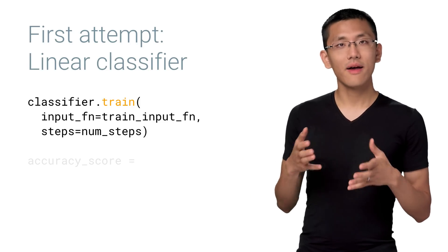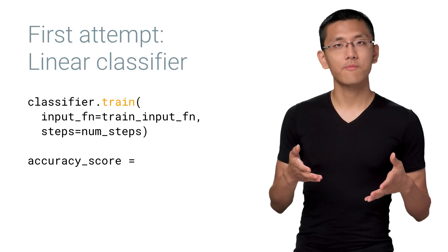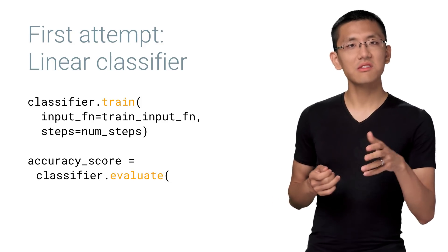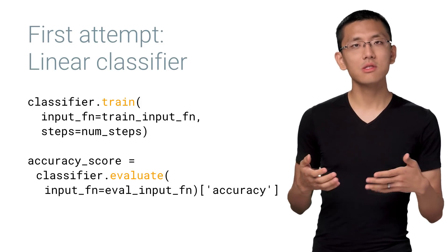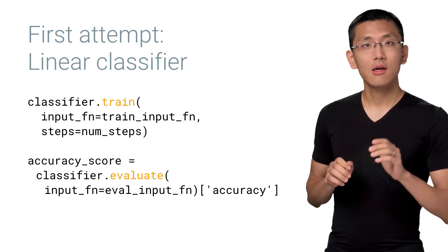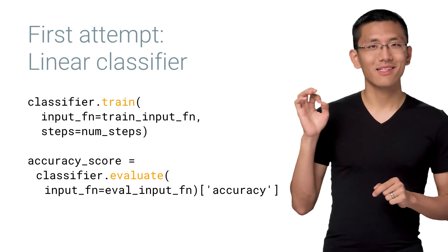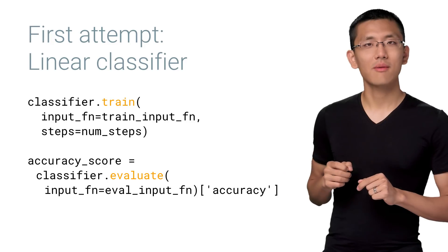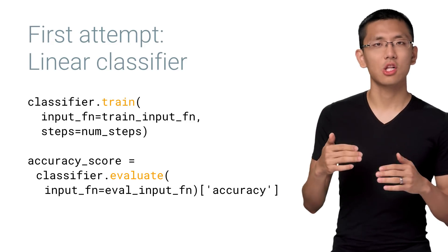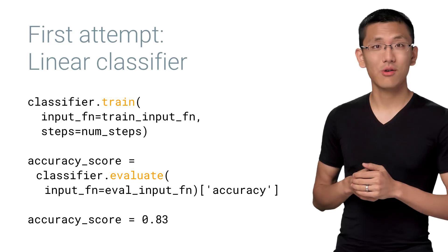Finally, we run an evaluation step to see how our model did. When we use the classic MNIST data set, this linear model typically gets about 91% accuracy. However, Fashion MNIST is a considerably more complex data set, and we can only really achieve an accuracy in the low 80s, and sometimes even lower than that.